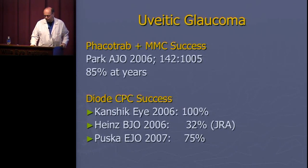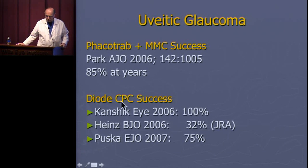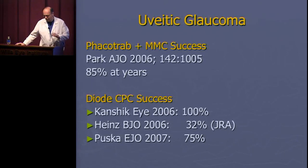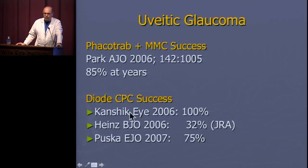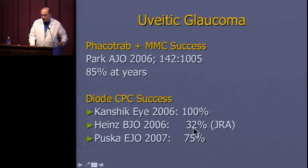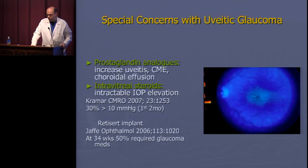Diode laser cyclophotocoagulation for uveitic glaucoma shows variable results in the literature. We at Wills are biased against it because it causes more inflammation and carries greater risk of hypotony — we see success closer to 32% rather than the inflated numbers some report. However, for patients who are not candidates for incisional surgery, cilioablation is often the option we end up using.